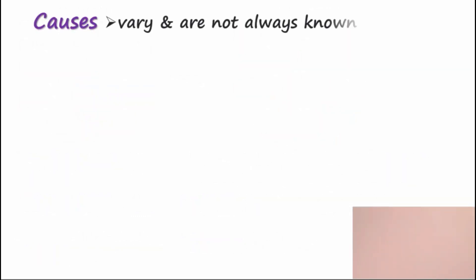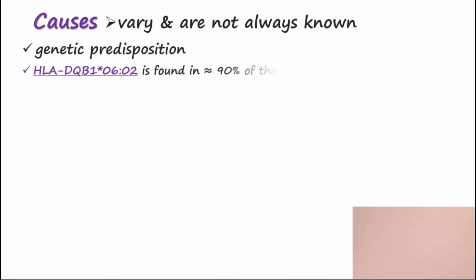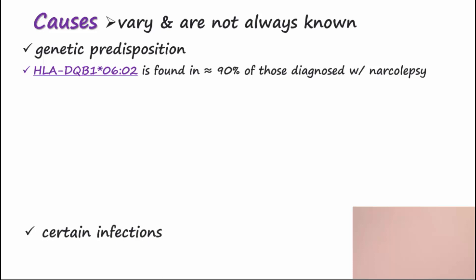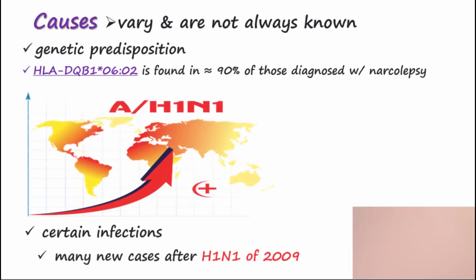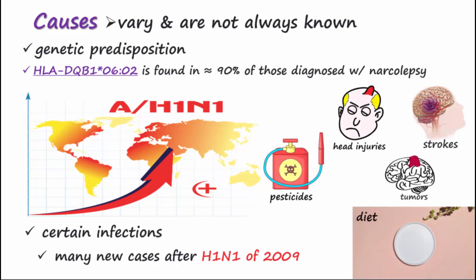Causes for loss of hypocretin-producing neurons vary and are not always known. Some people have a genetic predisposition — the allele variation HLA-DQB1-0602 has a strong correlation and is found in about 90% of those diagnosed. Narcolepsy is also correlated with certain infections; there were many new cases reported after the H1N1 flu epidemic of 2009. Other contributors include certain pesticides, head injuries, tumors, strokes, and diet.